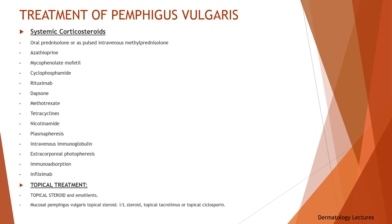The primary aim of treatment of pemphigus vulgaris is to decrease blister formation, prevent infections, and promote healing of blisters and erosions. Systemic corticosteroids are the mainstay of medical treatment, usually as moderate to high doses of oral prednisolone or pulsed intravenous methylprednisolone. Since their use, many deaths have been prevented and the mortality rate has dropped from 99% to 5–15%. Corticosteroids are not a cure but improve the patient's quality of life, though the doses and duration may result in serious side effects.